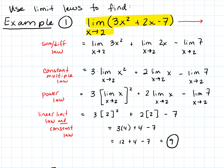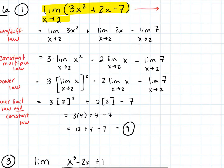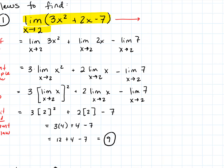Think about doing what is called just a substitution or a replacement. If we were to actually graphically look at this, we would just go to where x equals 2 on the graph, go up to the function, and notice from both sides that the polynomial is going to be approaching whatever the function value is. So what if we just replace 2? What if we just plug in 2 right here?